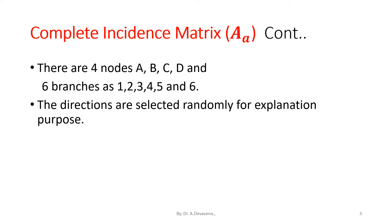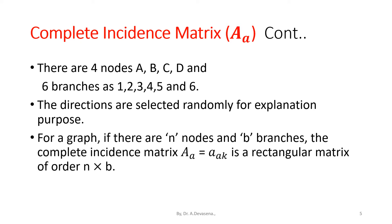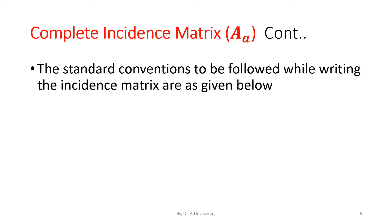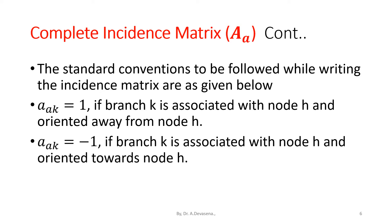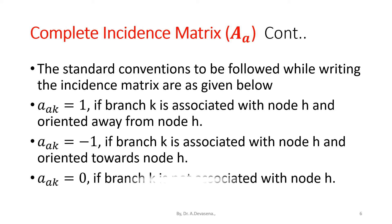The directions are selected randomly for explanation purposes. For a graph, if there are N nodes and B branches, the complete incidence matrix capital A suffix a is equal to small a suffix AK. It is a rectangular matrix of the order N cross B. The standard convention to be followed: a suffix AK equals minus 1 if branch K is oriented away from node H, and equals minus 1 if branch K is oriented towards node H.